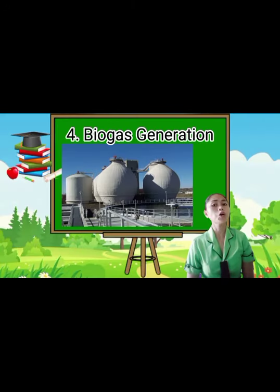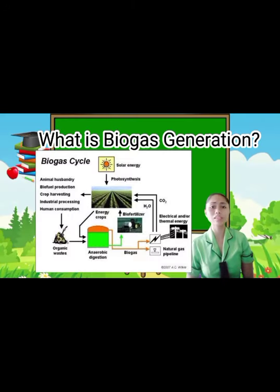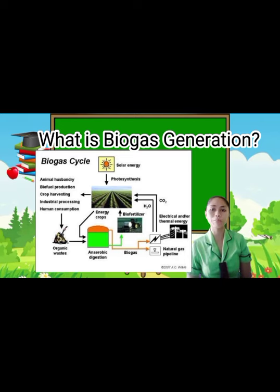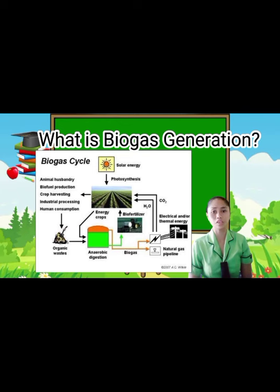Fourth method is biogas generation. Biogas is a renewable fuel produced by the breakdown of organic matter, such as food scraps and animal waste. It can be used in a variety of ways, including as vehicle fuel and for heating and electricity generation.